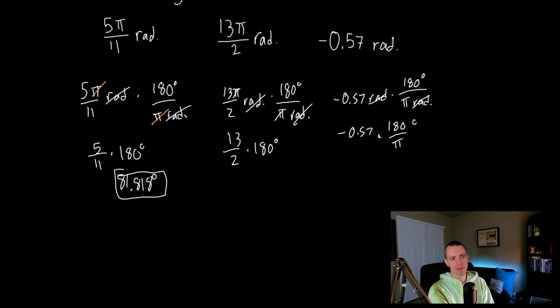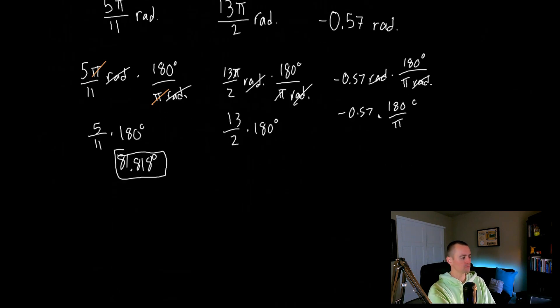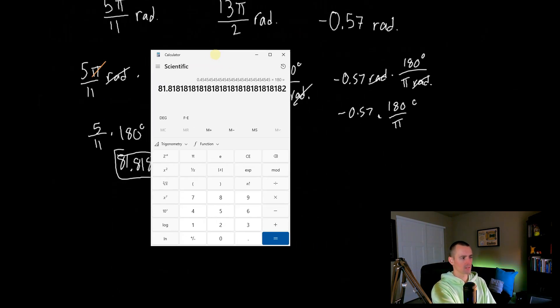So if we were to then type all this into a calculator, what we would end up with in this case is 0.57, and then we'll make that negative, and then times 180 divided by pi, which is right there. So that's going to leave us with negative 32.659 degrees.